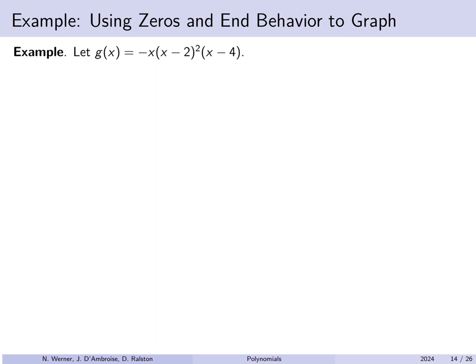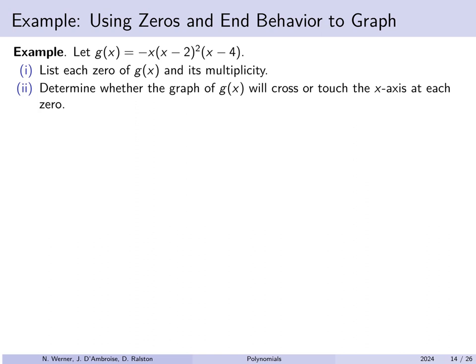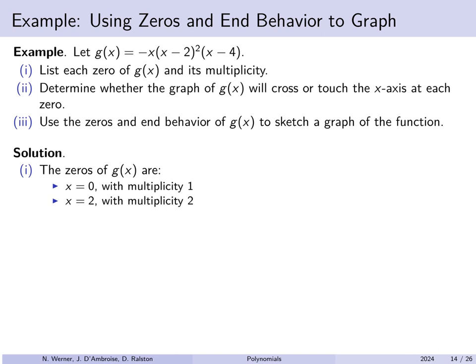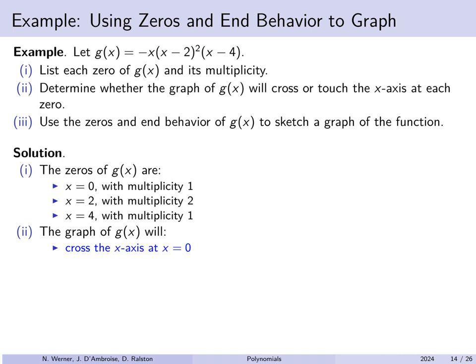To sketch a graph using zeros and end behavior: for g(x) = −x(x−2)²(x−4), list zeros: x = 0 with multiplicity 1, x = 2 with multiplicity 2, x = 4 with multiplicity 1. Odd multiplicity means the graph crosses at x = 0 and x = 4; even multiplicity means it touches at x = 2. The degree is 4 with leading coefficient −1, so the end behavior is down in both directions.